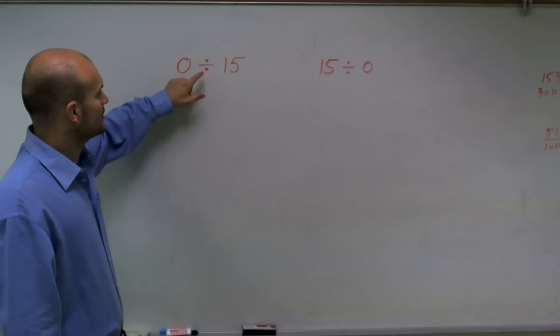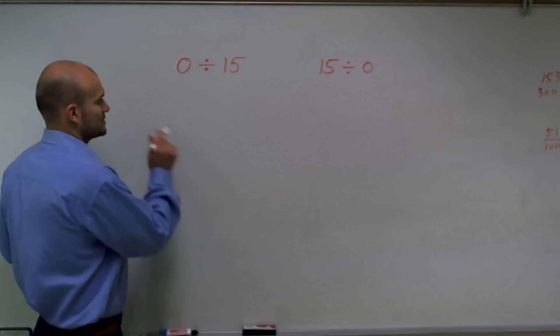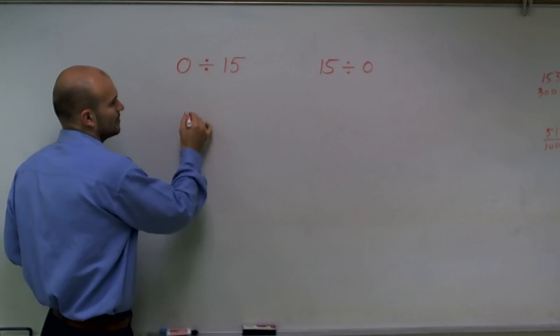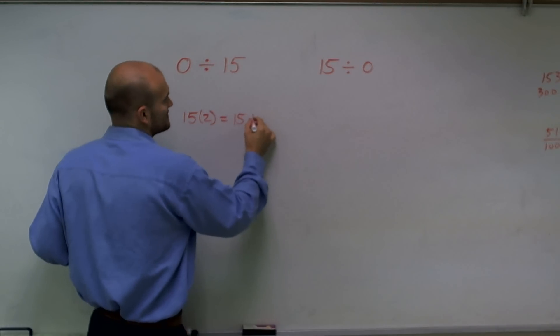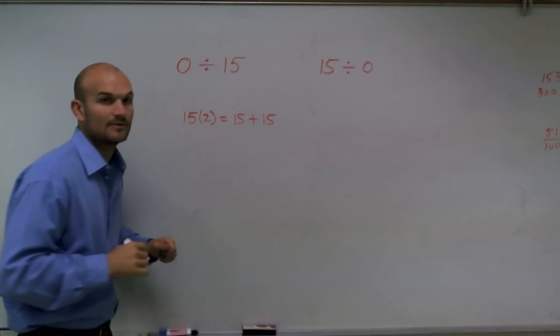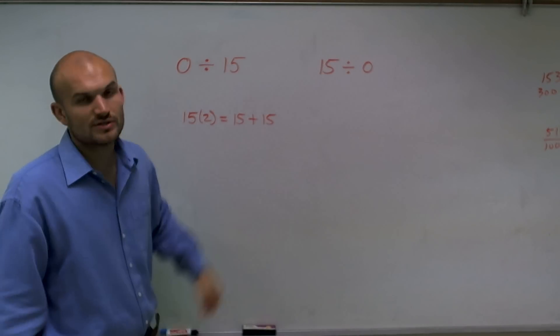So here's what I'm going to look at. Remember, multiplication, if we're multiplying 15 times 2, what that really means is 15 plus 15. I'm adding two sets of 15.